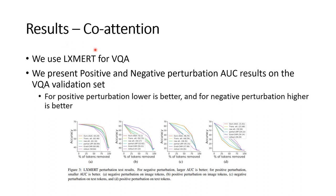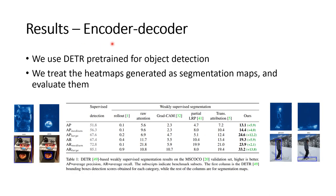The third and final architecture we present is an encoder-decoder architecture. We use the DETR model pre-trained for object detection, treat the heatmaps created by different explainability algorithms as segmentation maps, and evaluate them on the semantic segmentation test. Our method achieves much more favorable performance in comparison to all other methods, including the current state of the art, confirming that our novel formulation is necessary to deal with any form of attention other than self-attention.